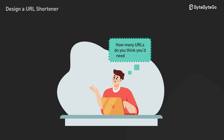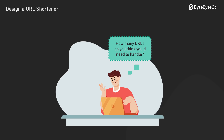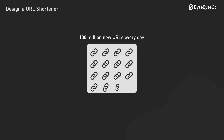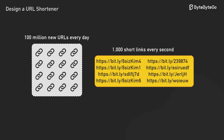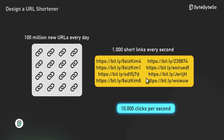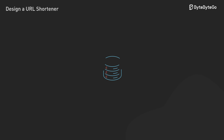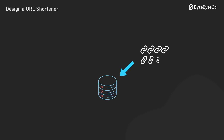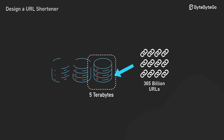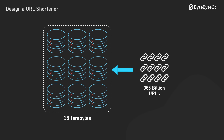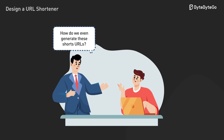But here's where it gets interesting. Let's say you're building the next bit.ly. How many URLs do you think you'll need to handle? Try 100 million new URLs every day — that's over a thousand new short links created every single second. And since people click links way more than they create them, you're looking at over 10,000 clicks per second. Over 10 years, that's 365 billion URLs to keep track of, and just storing the URLs themselves would take 36 terabytes. So the real question becomes: how do you even generate these short URLs?